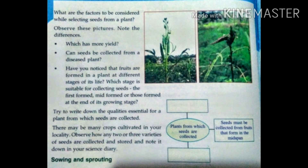Observe this plant. What are the differences between the two ladies finger plants? Try to write down the qualities. The plant from which seeds are collected must be productive. It should not be a diseased one. It must be at the fruit-bearing stage with ripened fruits.